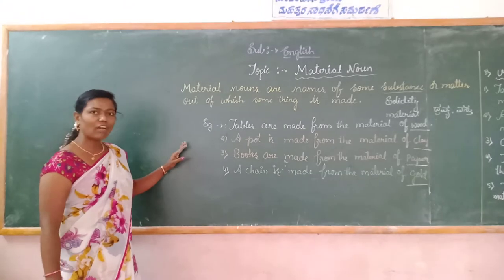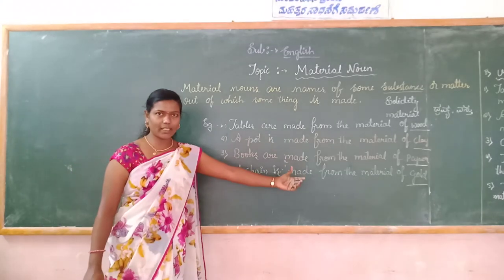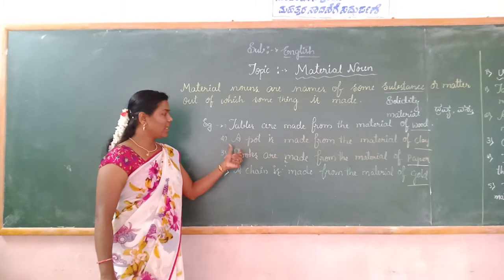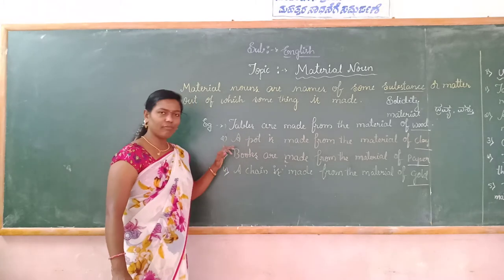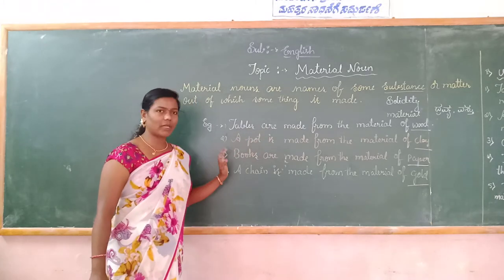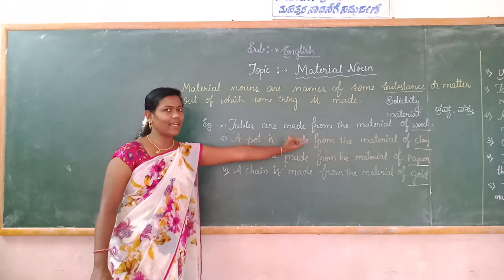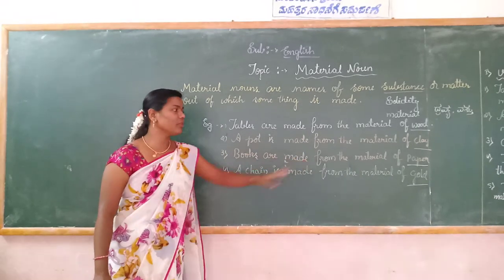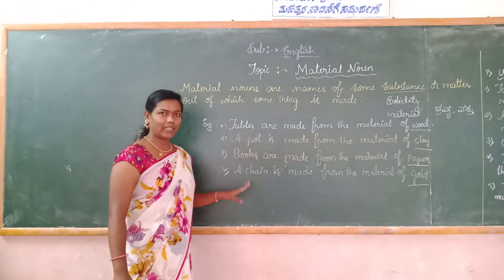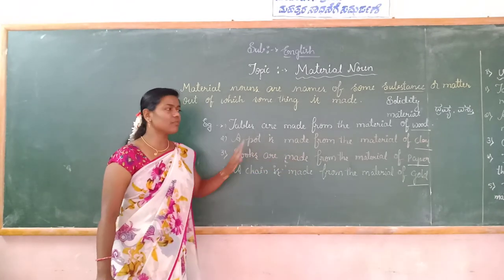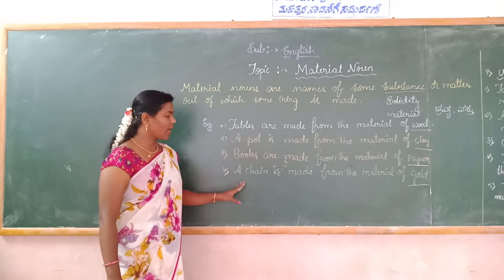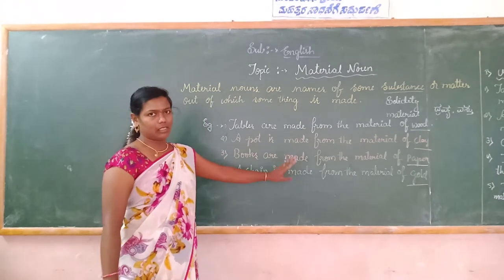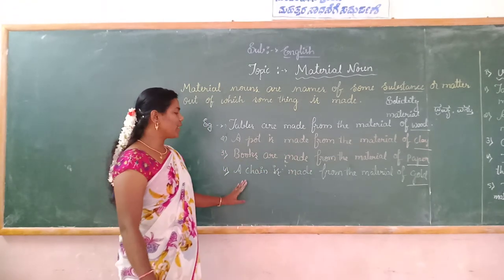Tables are made from the material of wood — wood is the material used to prepare a table. A pot is made from the material of clay — clay is the material used to prepare a pot. Books are made from the material of paper — paper is the material noun used to prepare a book. And the chain is made from the material of gold — gold is the material used to make a chain.